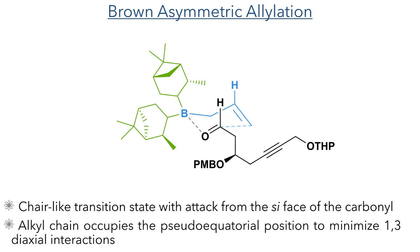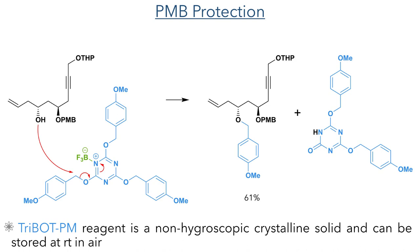As with the other alcohol in the molecule, this newly produced hydroxyl was also protected with a PMB group, this time using the tri-OBn PMB reagent. This reagent is activated by Lewis acids such as boron trifluoride, which coordinates to the nitrogen, activating the imidate as an electrophile and allowing it to be eliminated upon attack of the hydroxyl group. This produces an amide in place of the imidate, and the reagent can react up to three times. It offers advantages over other PMB protection methods as it is a non-hygroscopic crystalline solid that can be stored at room temperature in air without degrading.